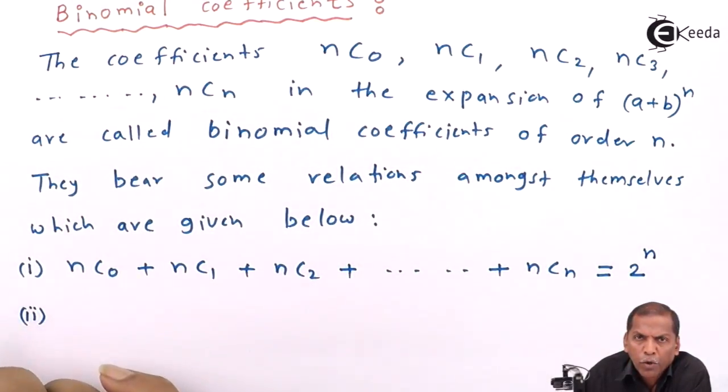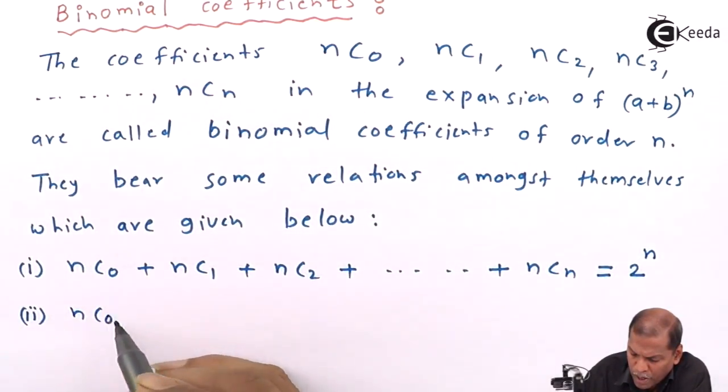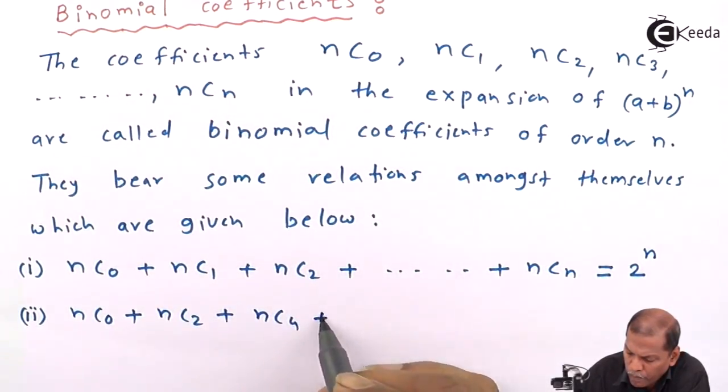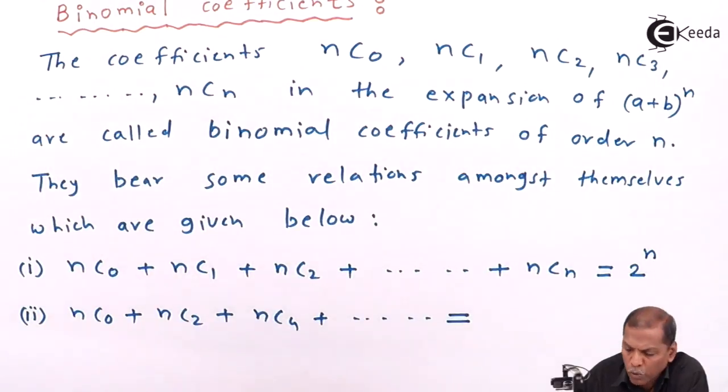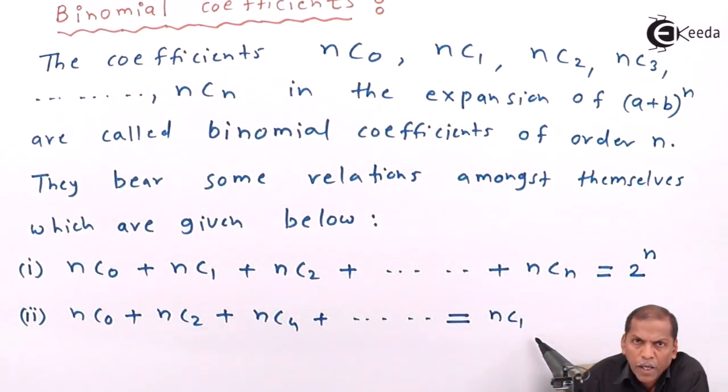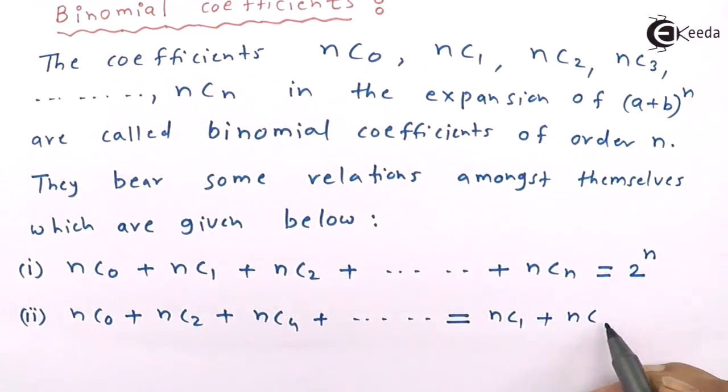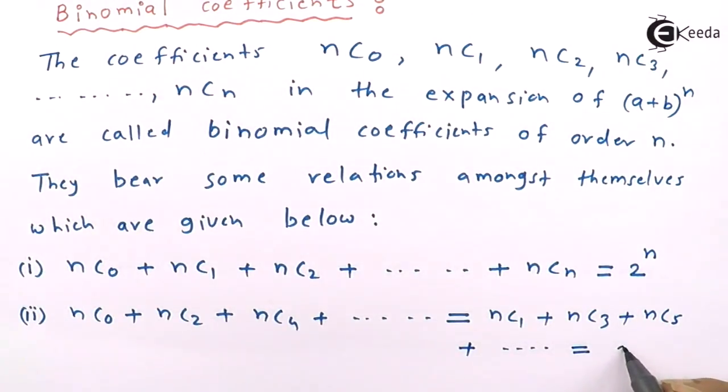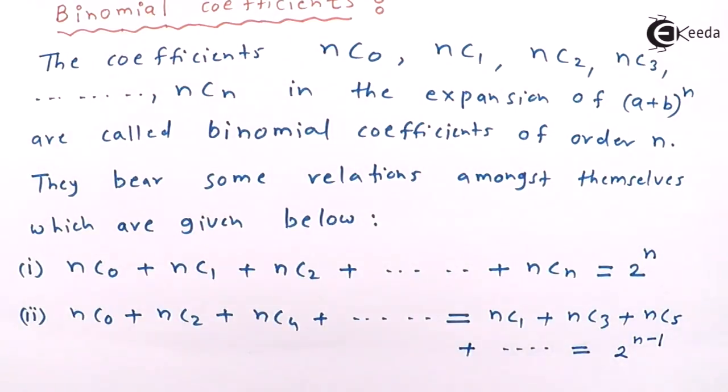Result number 2 is: nC0 + nC2 + nC4 + ... is equal to nC1 + nC3 + nC5 + ..., and that equals 2^(n-1).